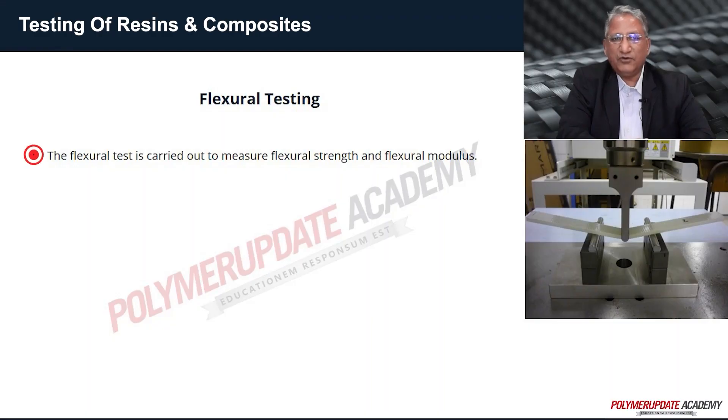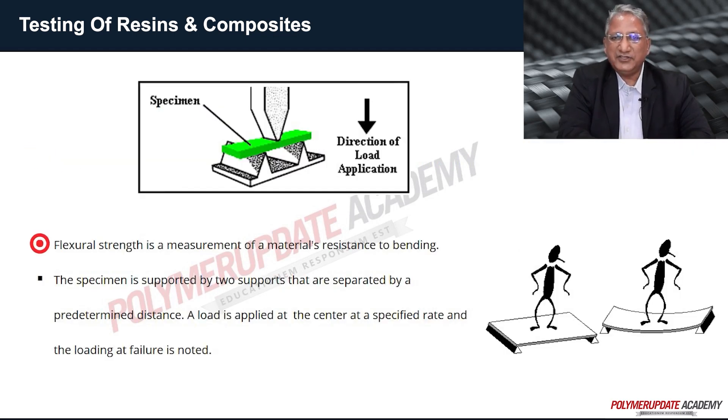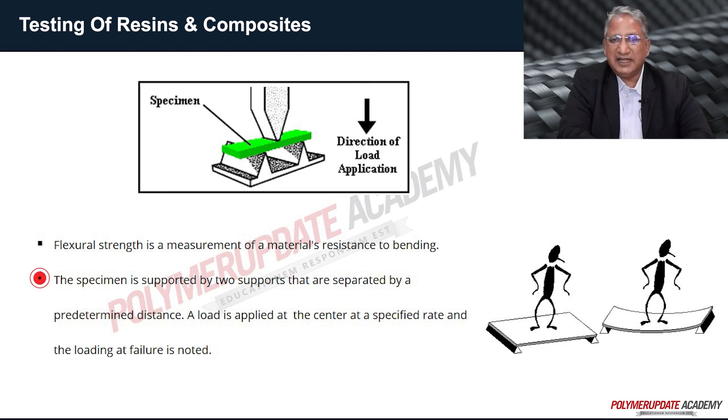Flexural strength is defined as the maximum stress at the outermost fiber on either the compression or tension side of a specimen, or the capacity of a polymer sample to resist deformation under a bending moment or load. Flexural modulus is calculated from the slope of the stress versus strain deflection curve. The specimen is placed on two supports spaced at a specified distance, a load is applied at the center at a specified rate, and the loading at failure is noted.